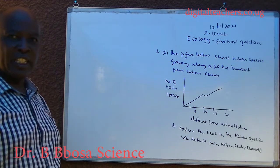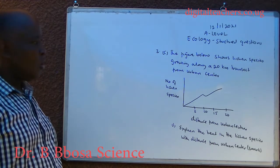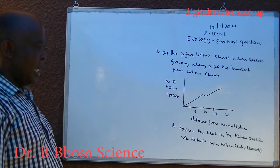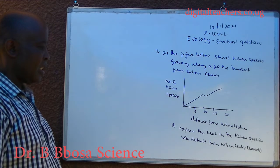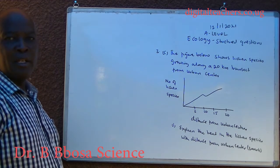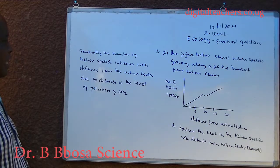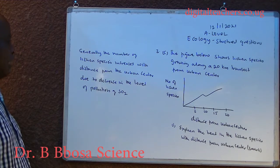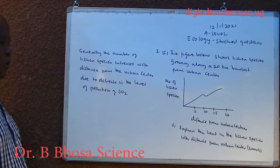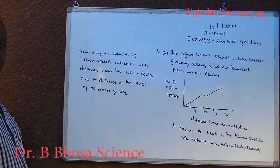The figure below shows lichen species growing along a 20 km transect from an urban center. Generally, the number of lichen species increases with distance from the urban center due to a decrease in the level of pollution from sulfur dioxide and other toxic gases.